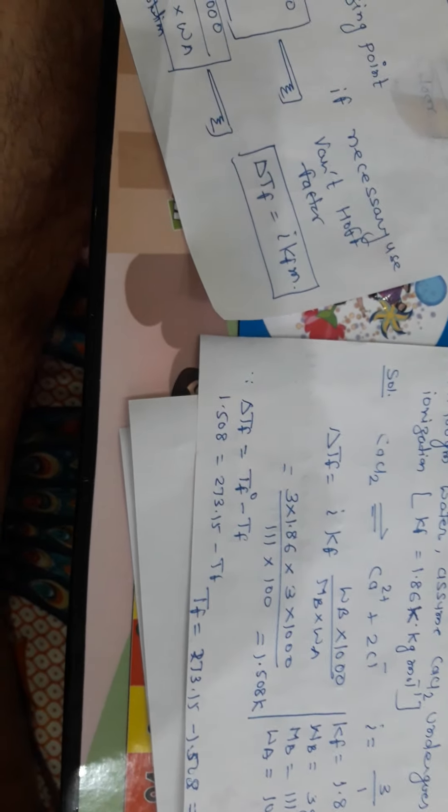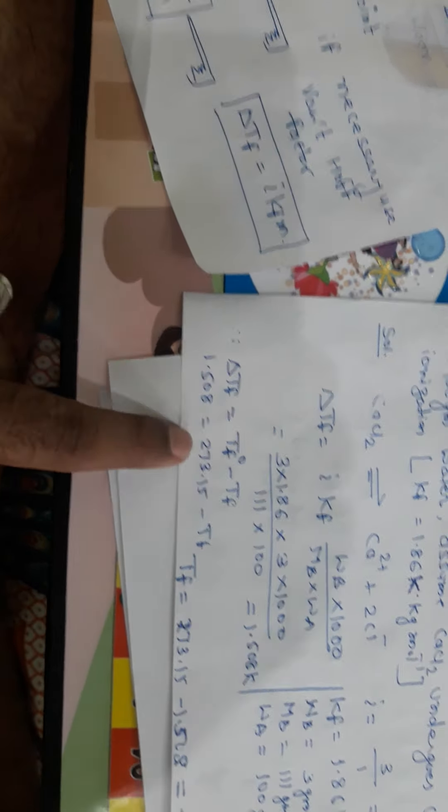Since ΔTf is equal to Tf0 minus Tf, hence that result will be 1.508 is equal to 273.15 minus Tf. The Tf is equal to 273.15 minus 1.508, which is equal to 271.642. So in this problem,